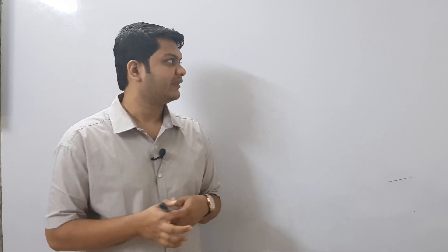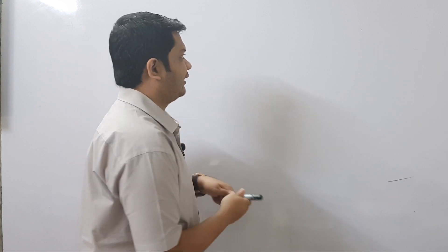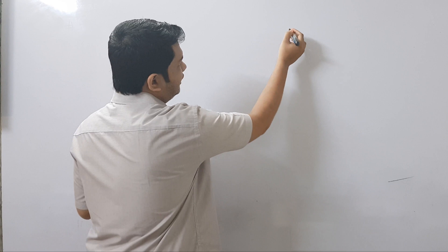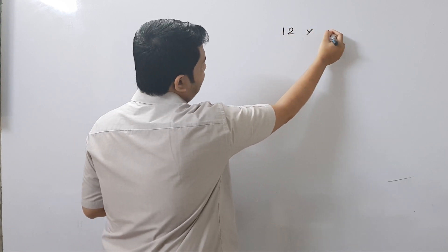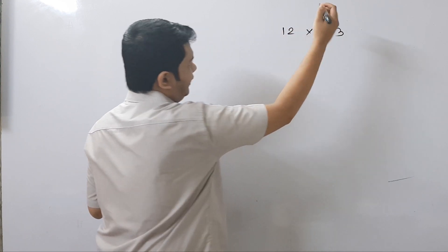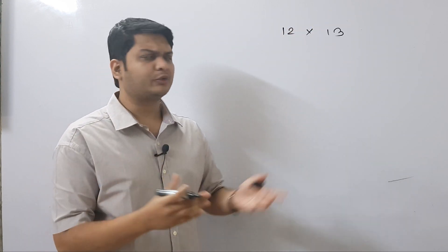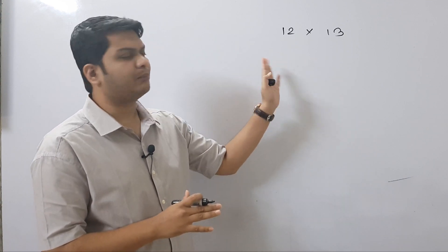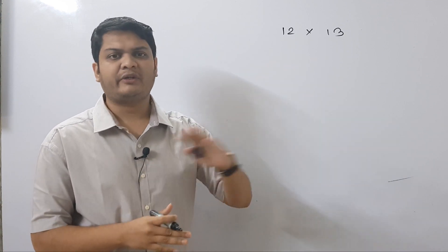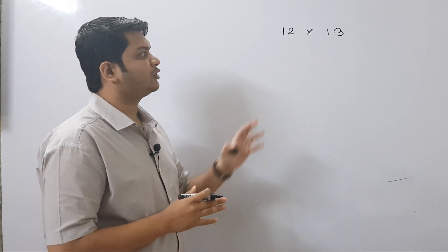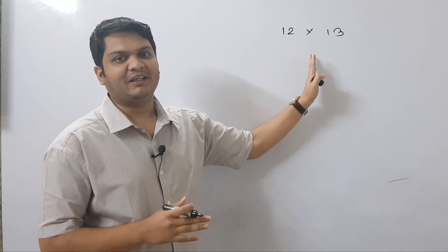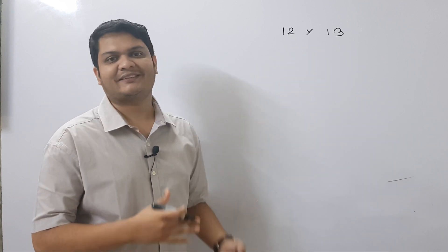Doesn't it sound amazing? So suppose we want to multiply these two numbers, 12 times 13. We all know how to multiply these numbers using the traditional method, but today we will learn how to multiply these numbers using just lines.